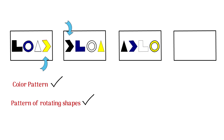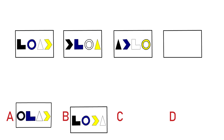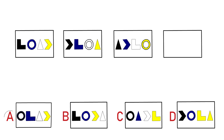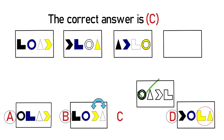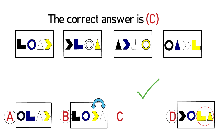Let's look at each answer and exclude incorrect ones. Choice A matches the color pattern, but the next shape after the circle should be a triangle, not an L-shape as presented. Choice B can be excluded because it doesn't match the color pattern — the yellow and white shapes need to be swapped. Choice C is the correct answer; it meets requirements for both patterns. Choice D does not match the color pattern since two rightmost shapes are yellow.